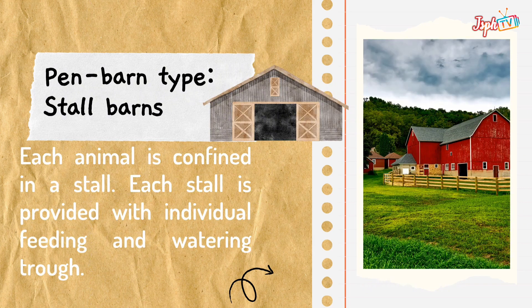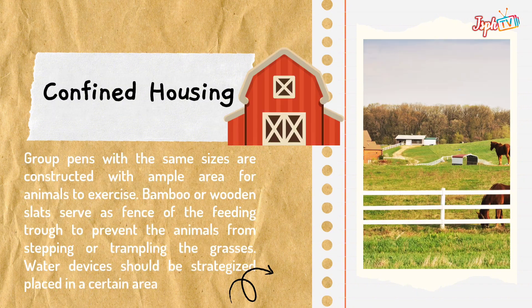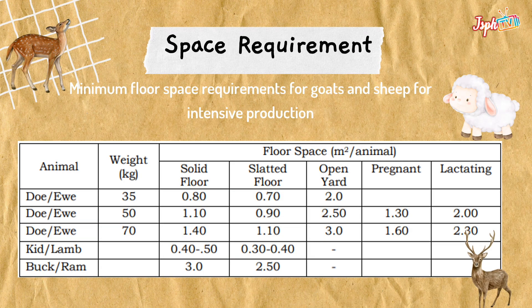For the pen barn type, each animal is confined in a stall, and each stall is provided with individual feeding and watering troughs. For confined housing, group pens of the same sizes are constructed with ample area for animals to exercise. Bamboo or wooden slats serve as fences of the feeding trough to prevent the animals from stepping or trampling the grasses. Water devices should be strategically placed in certain areas.